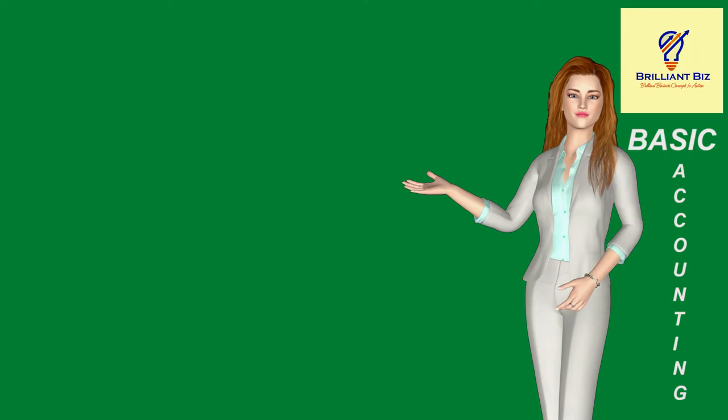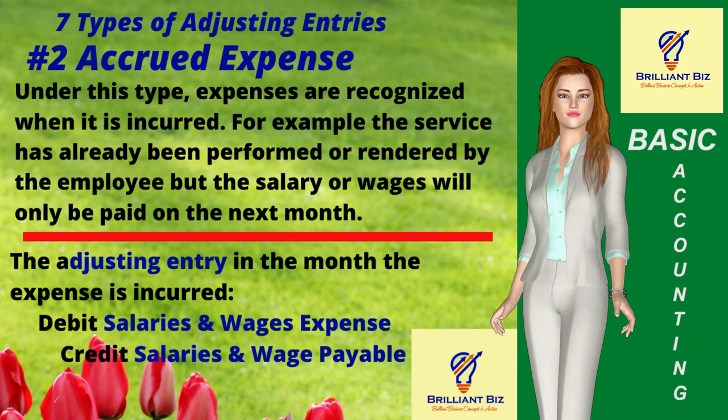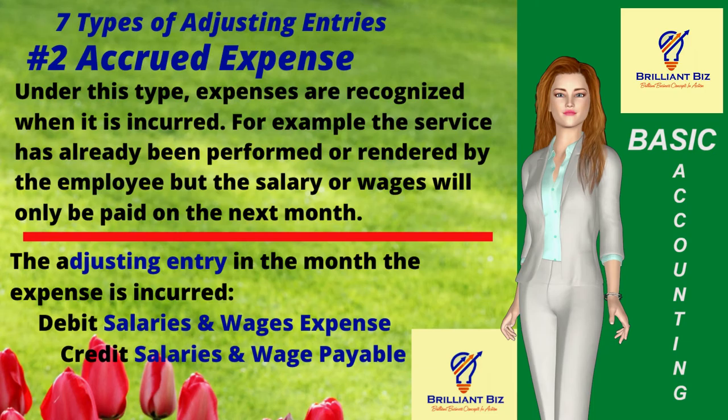Two: accrued expenses. Under this type, expenses are recognized when incurred. For example, the service has already been rendered by the employee but the salary or wages will only be paid the next month. The adjusting entry at the end of an accounting period is debit salaries and wages expense and credit salaries and wages payable.